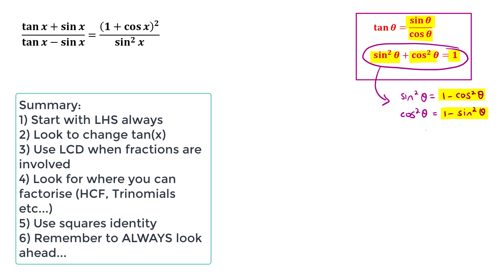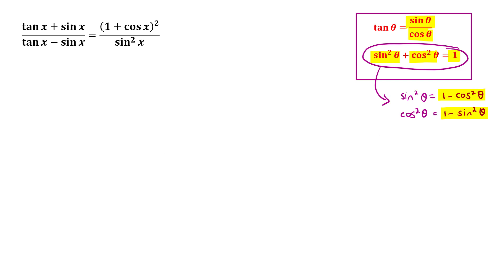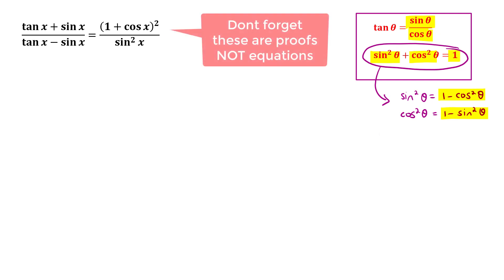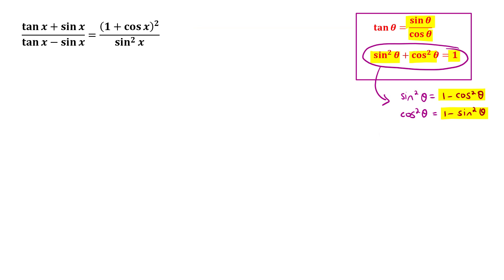This style of questioning is quite tough and the questions can get difficult. Throughout this video, sit and watch what I'm doing first, then go back and reattempt these questions on your own with the new methods you've learned. The first example is: prove that tan x plus sin x over tan x minus sin x equals one plus cos x squared over sin squared x.